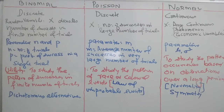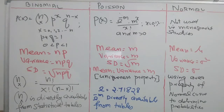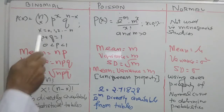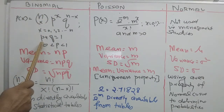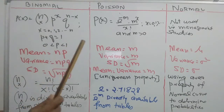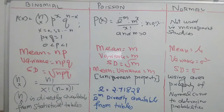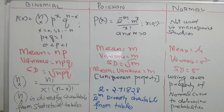The probability function of binomial distribution is: P(X) = nCx · p^x · q^(n−x), where x assumes values 0, 1, up to n, p + q = 1, and p lies between 0 and 1. For Poisson distribution, P(X) = e^(−m) · m^x / x!, where x assumes values 0, 1, 2, etc., and m > 0. Here e is a constant with value 2.71828. The probability function of normal distribution is not used in management studies.